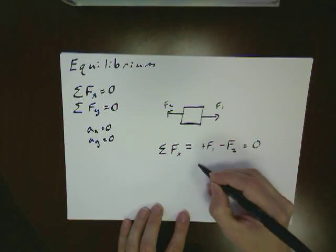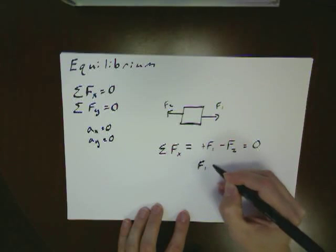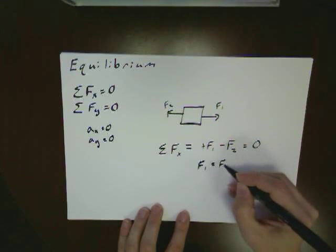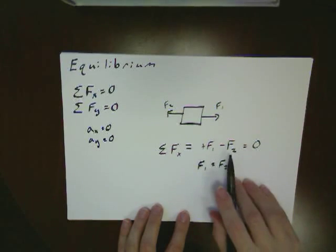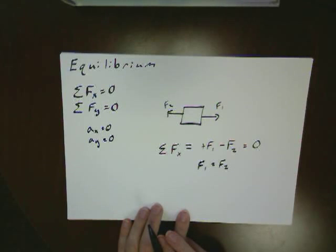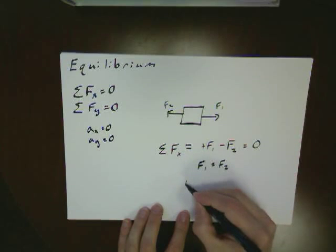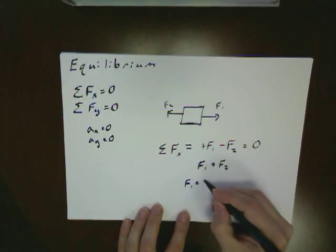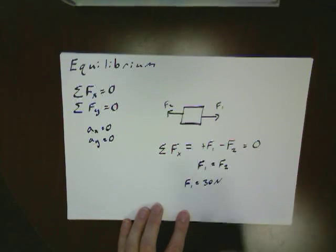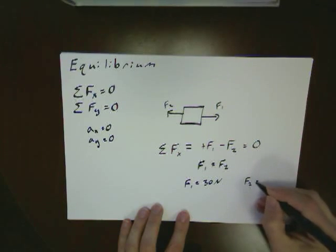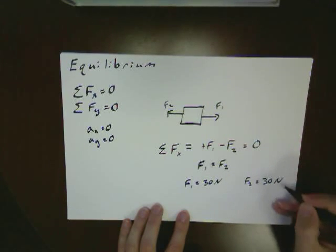If I do the algebra, what I see is that means that F1 has to be equal to F2. I added F2 to both sides of the equation. If I was given this in terms of numbers, if F1 is equal to 30 newtons, F2 also has to be equal to 30 newtons.